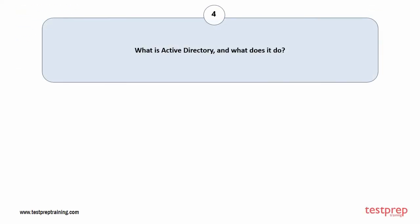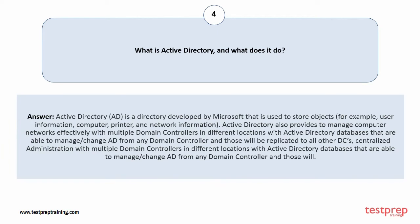Question number 4: What is Active Directory and what does it do? Active Directory is a directory developed by Microsoft that is used to store objects — for example, user information, computer, printer, and network information. Active Directory also provides the ability to manage computer networks effectively, with multiple domain controllers in different locations with Active Directory databases that are able to manage or change AD from any domain controller, and those changes will be replicated to all other DCs.